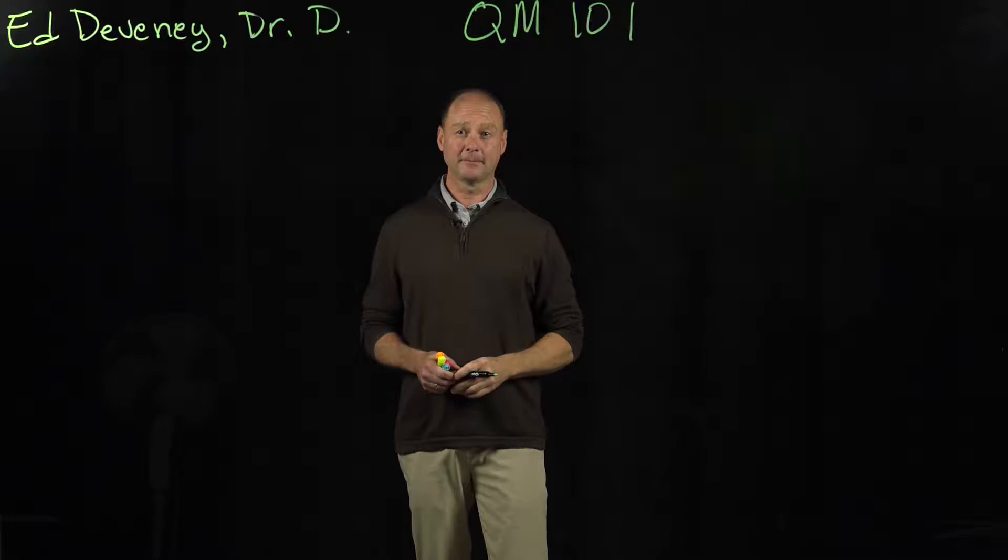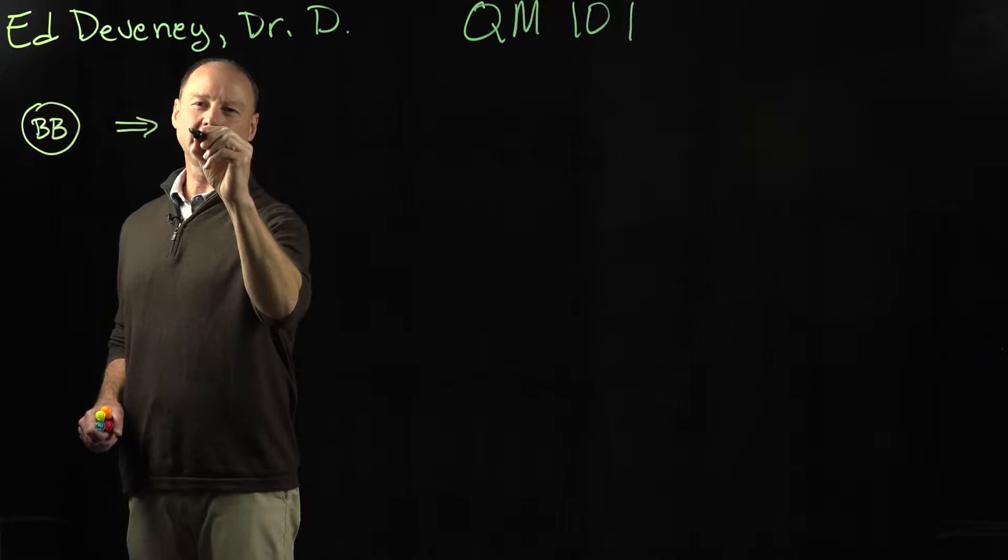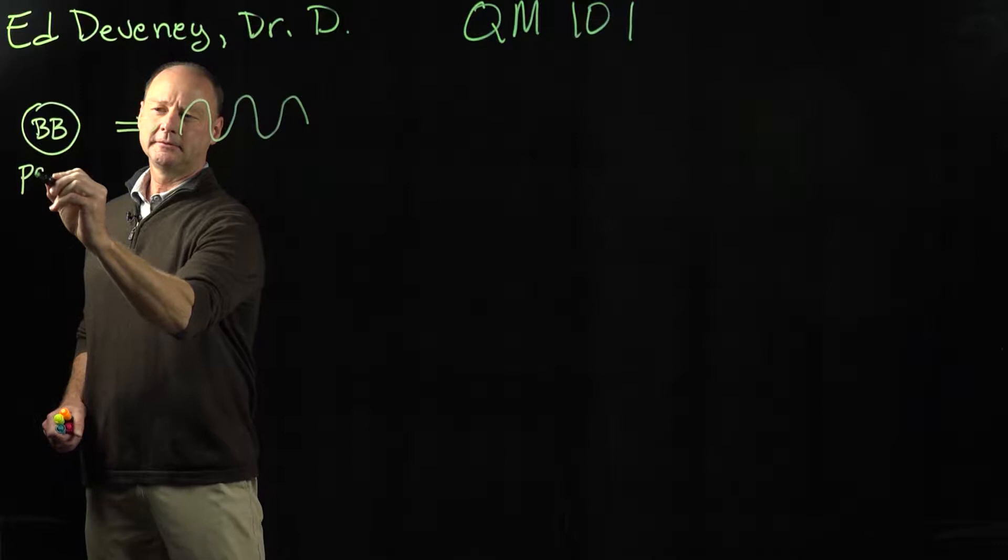The basic idea of quantum mechanics is that everything, even particles—let's imagine this is a baseball—can be represented by a wave. So it kind of has a wave. This would be a particle-like description of a baseball and this would be wave-like.